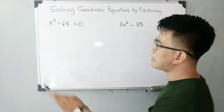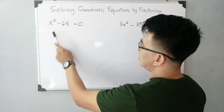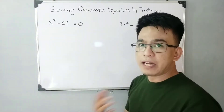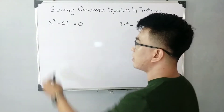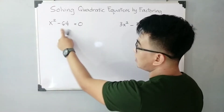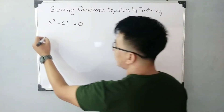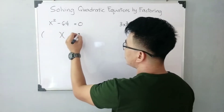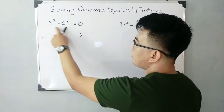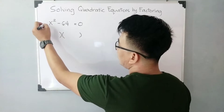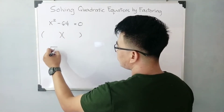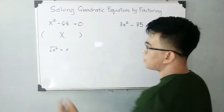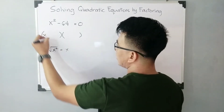We have x squared minus 64 is equal to zero. We will try factoring by difference of two squares because x squared is a perfect square, as well as 64. To factor it out, you need to prepare two parentheses since this is a difference of two squares. Get the square root of x squared — the first term here is x.